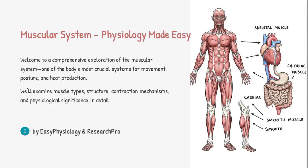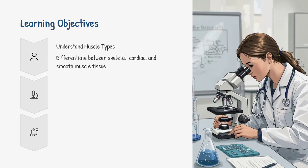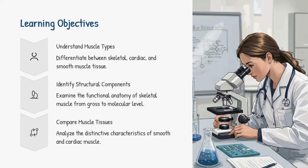Welcome to Easy Physiology and Research Pro. Today, we're diving into one of the most dynamic and vital systems of the human body — the muscular system. From movement to posture, from circulation to digestion, muscles are at work constantly. By the end of this session, you'll be able to identify and differentiate between the three types of muscle tissue, understand their structural components from a macroscopic to molecular level, and compare how they function in different physiological settings.